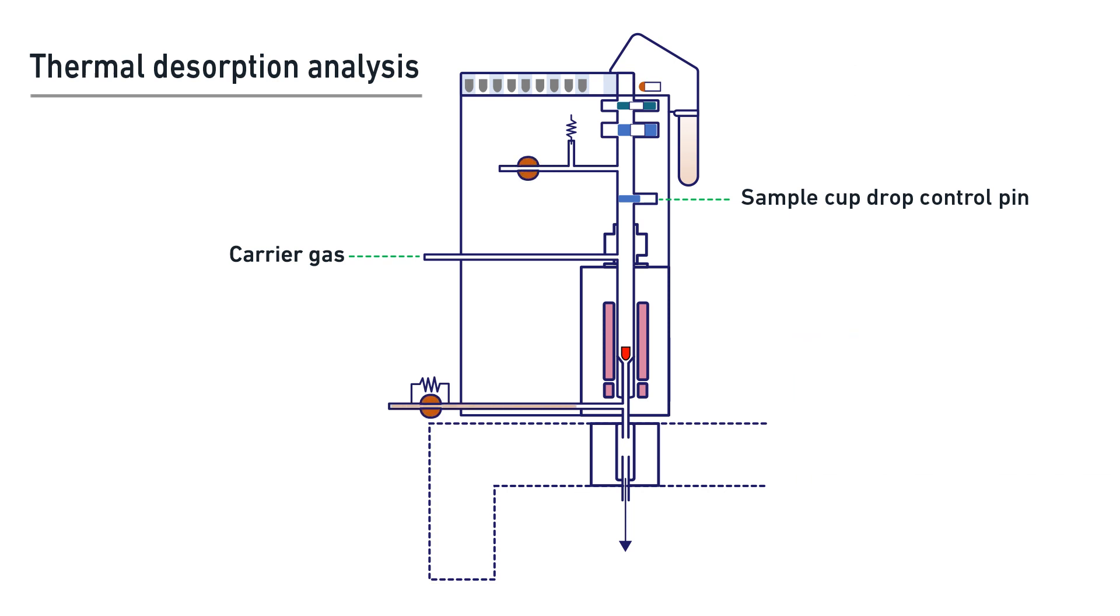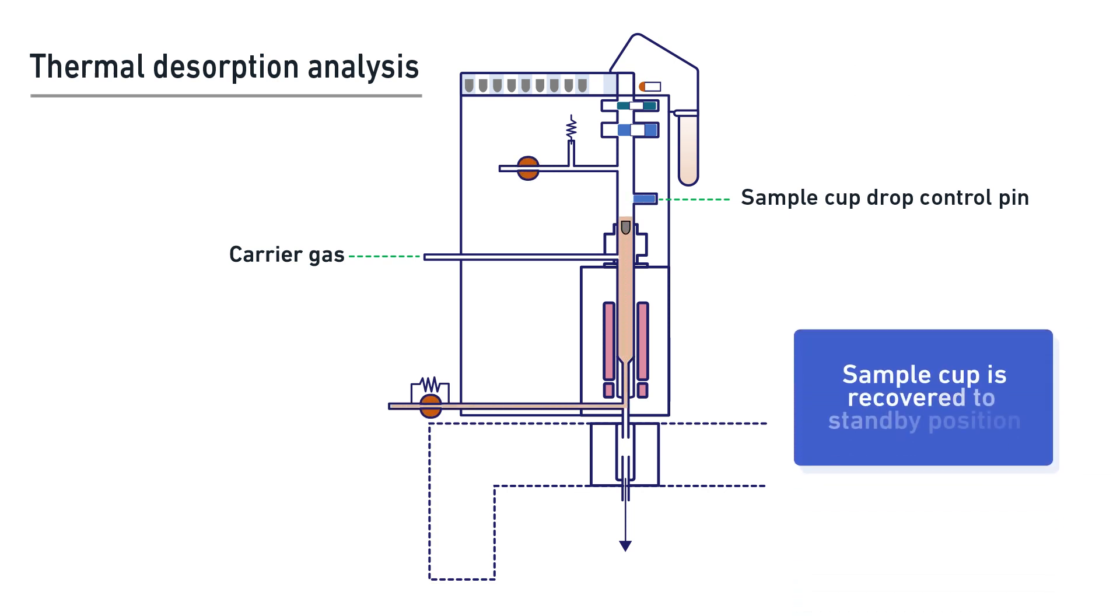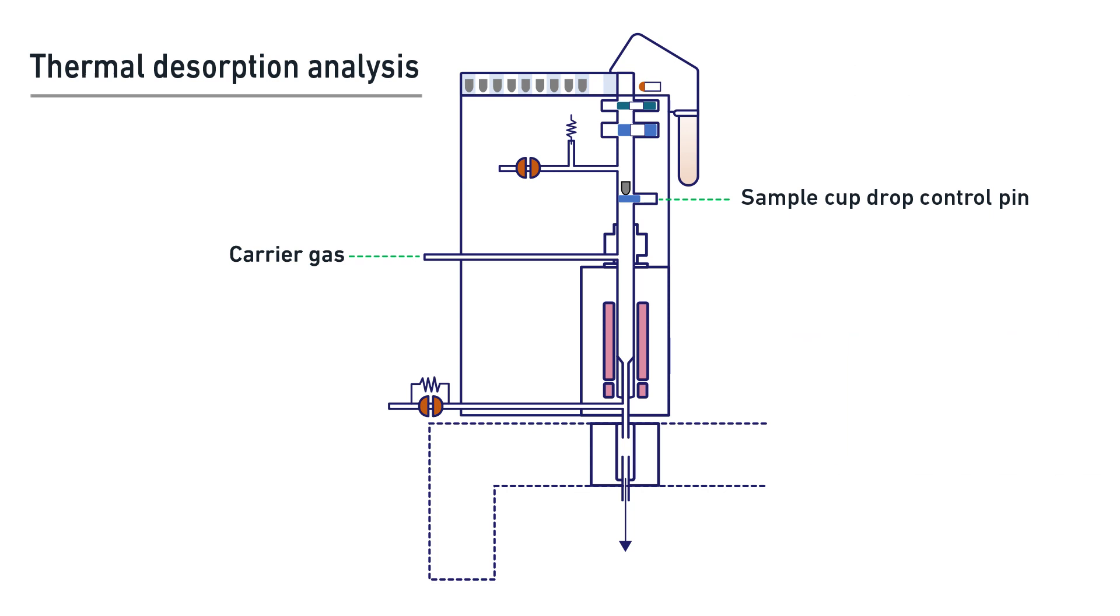Once the volatile fraction has been desorbed, the inert sample cup is relocated up to be held at near ambient temperature using Frontier's auto-shot sampler. This prevents sample degradation, decomposition, or thermosetting during the chromatographic analysis of the thermally extracted volatile fraction.